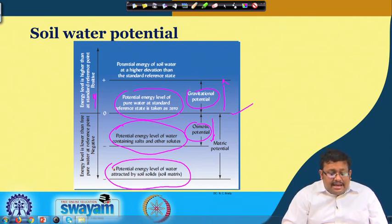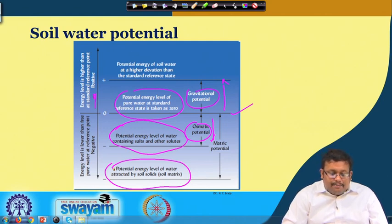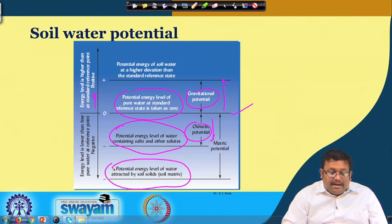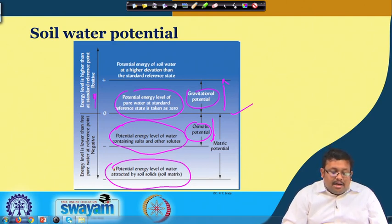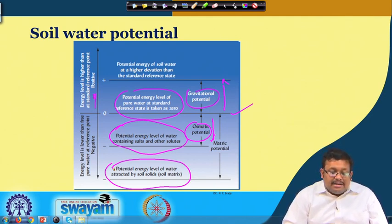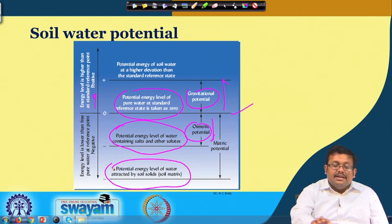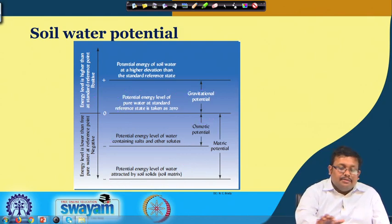You can see the manifestation of different potentials — gravitational potential, osmotic potential, and matric potential — and their relative position compared to the pure water reference state, which is taken as zero. The potential at the reference state is always taken as zero.